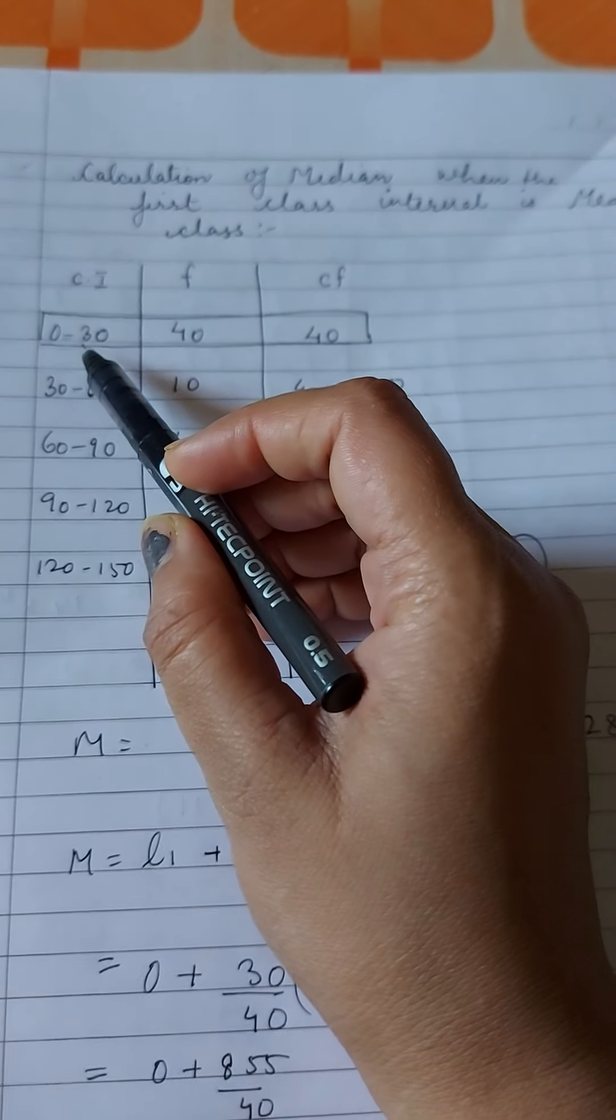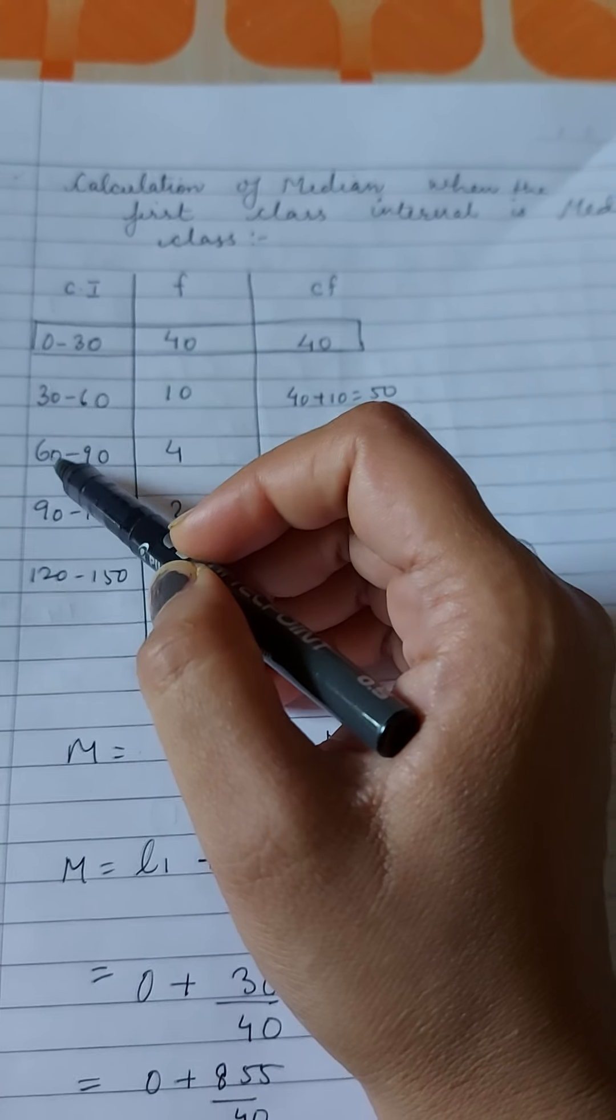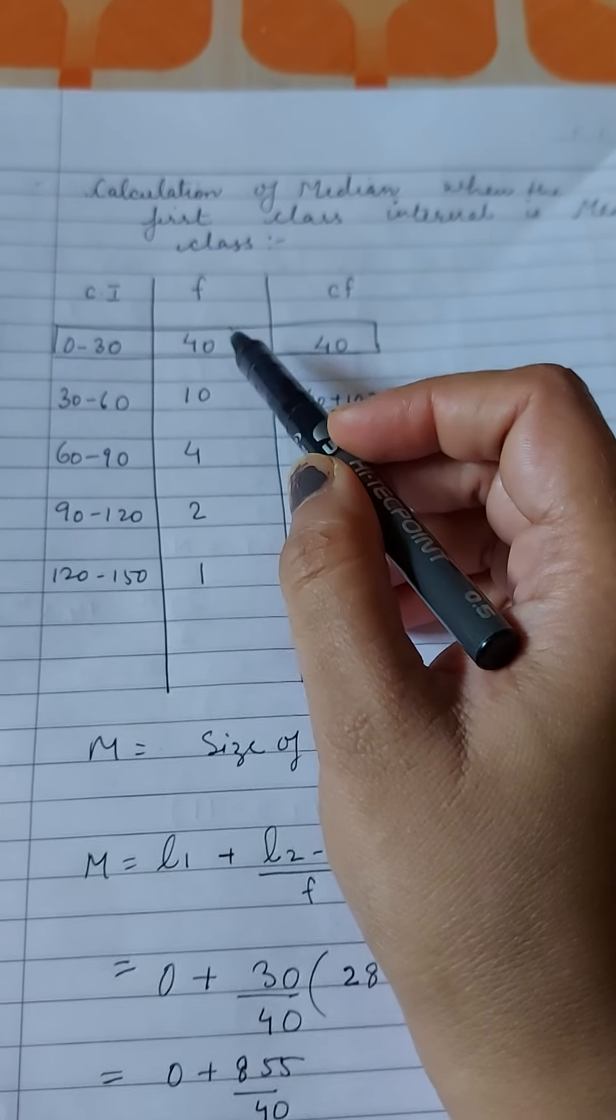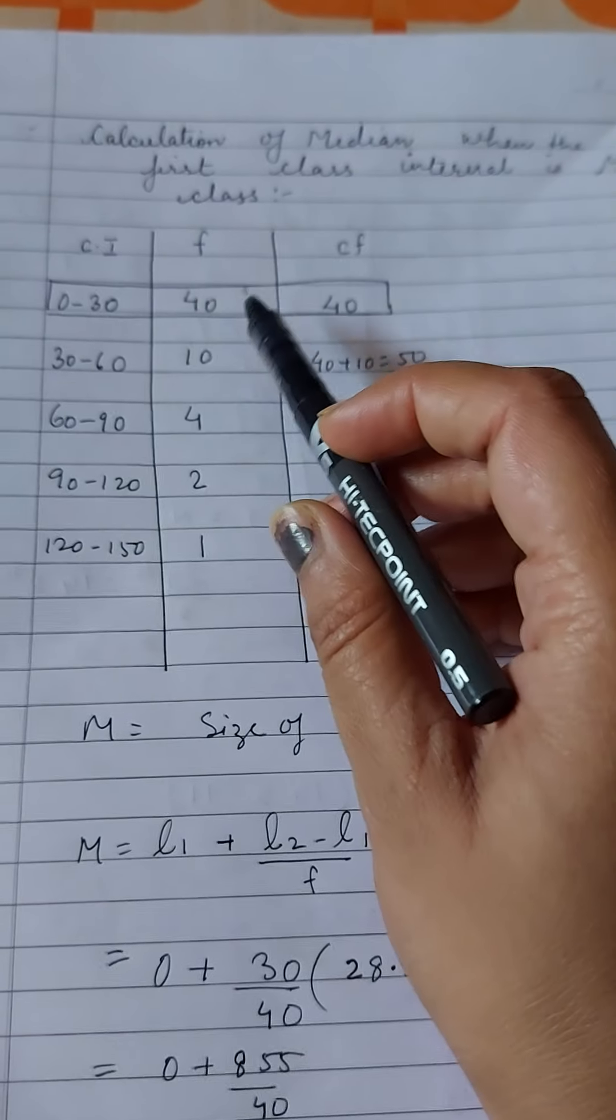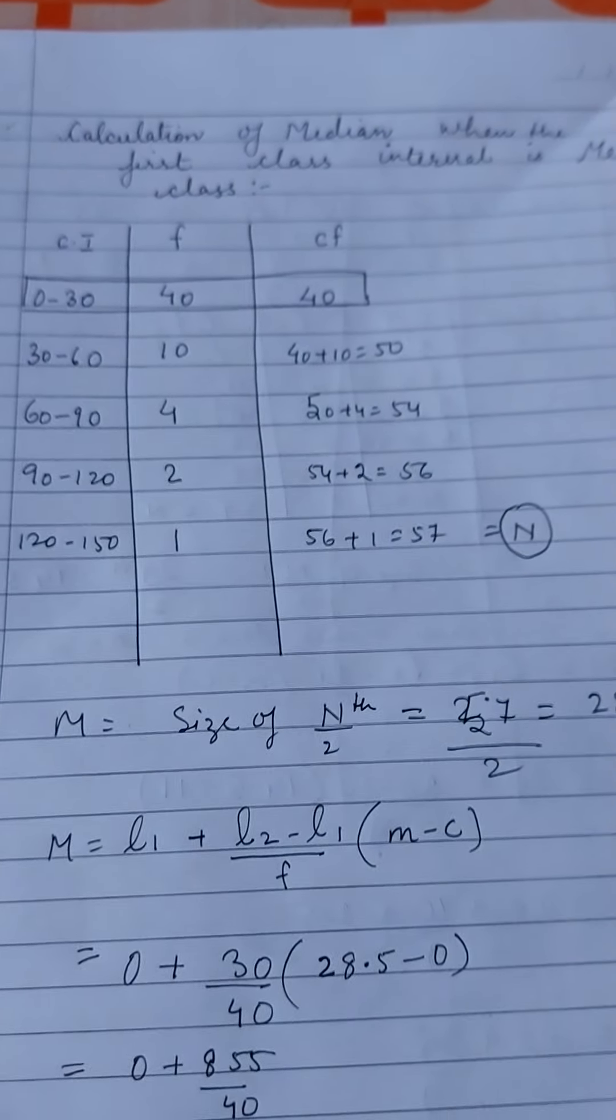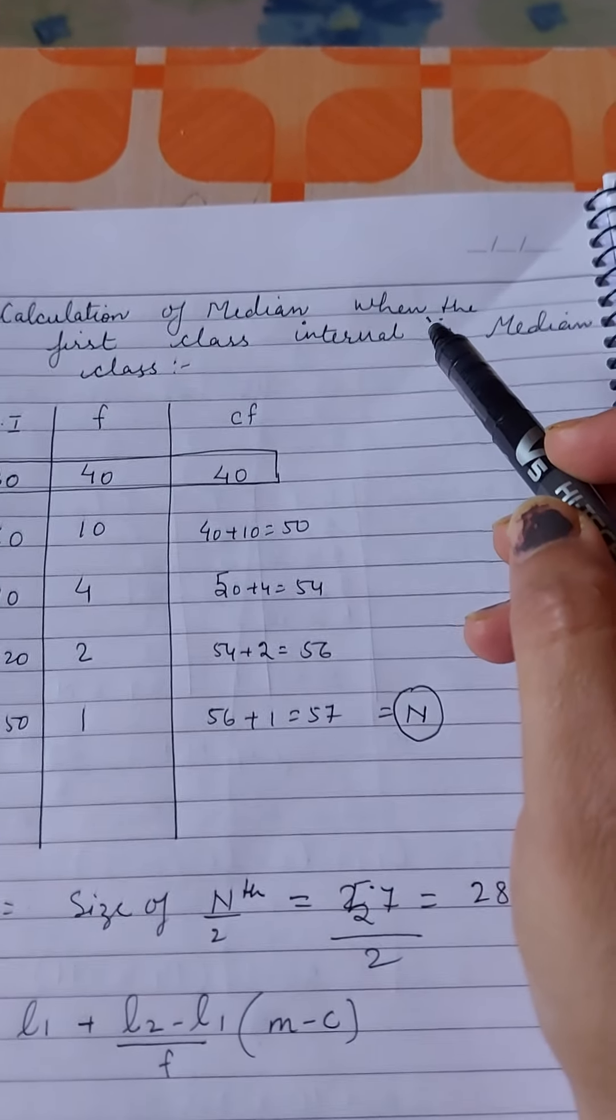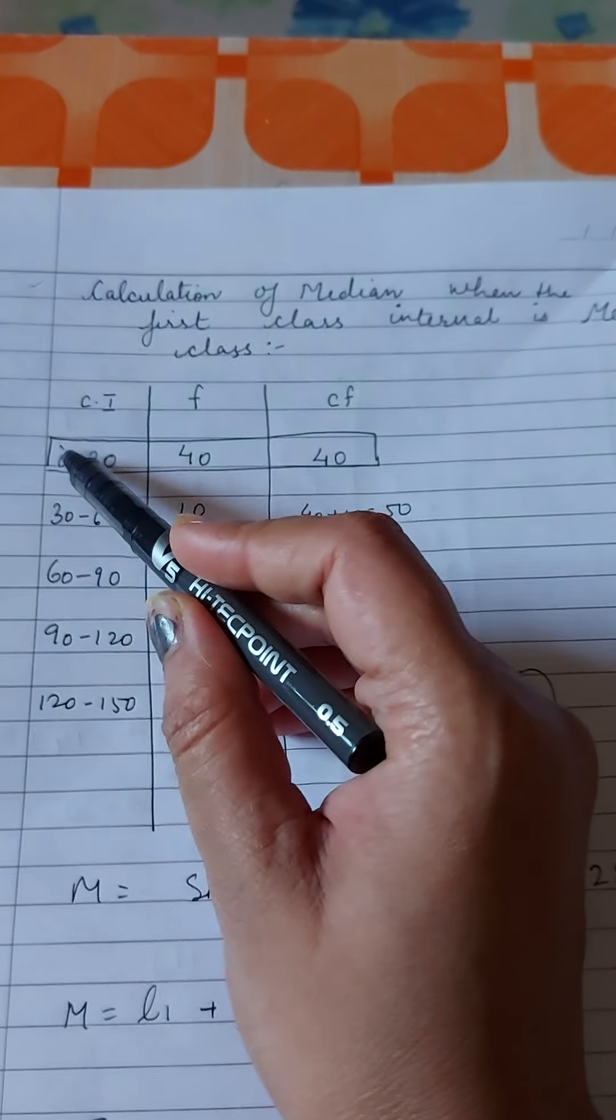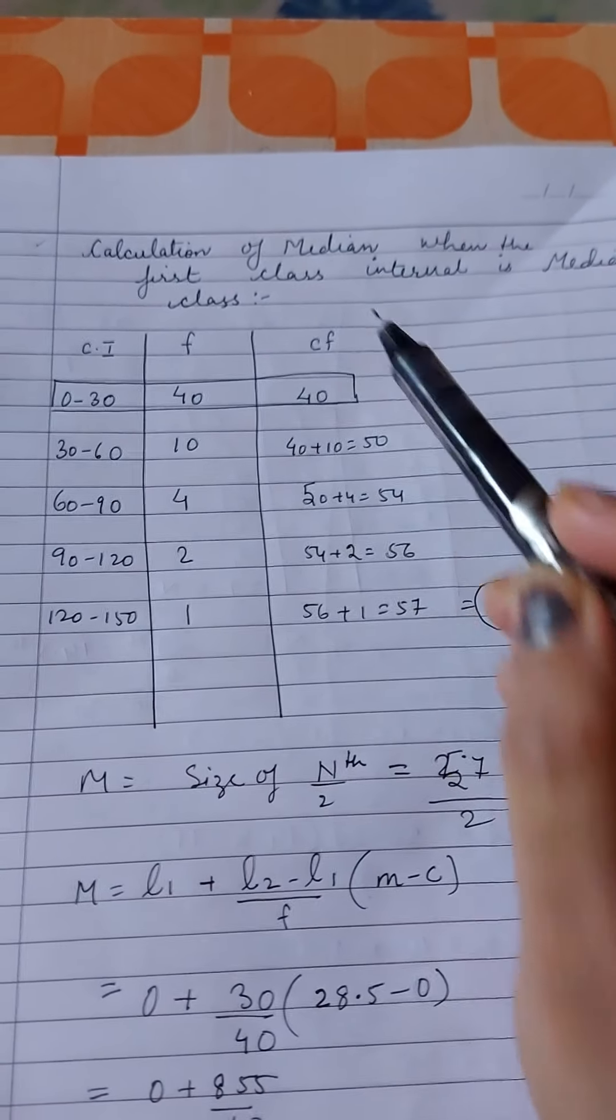When you look at the question, you have class intervals: 0 to 30, 30 to 60, 60 to 90, 90 to 120, 120 to 150. Frequency is given and we calculate cumulative frequency. We calculate cumulative frequency by adding frequencies. The point of this topic is when first class interval, this first class interval, is your median class.